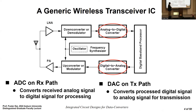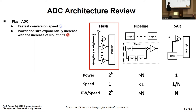There are a few architectures for various applications. First is the flash ADC. It trades hardware for speed by using multiple comparators to simultaneously compare the input voltage with different references, achieving the fastest conversion rate. However, power and size increase exponentially with a larger number of bits.